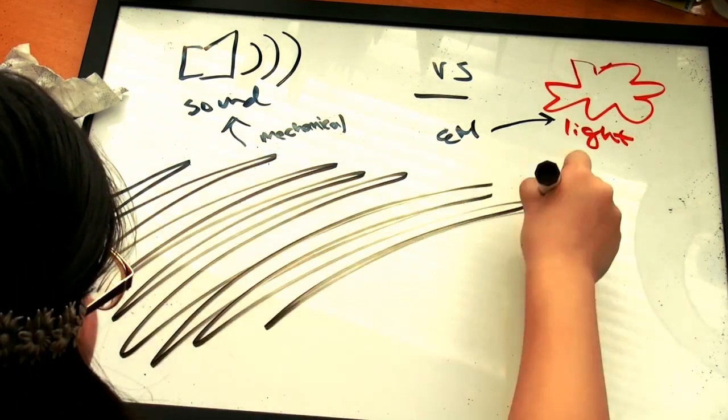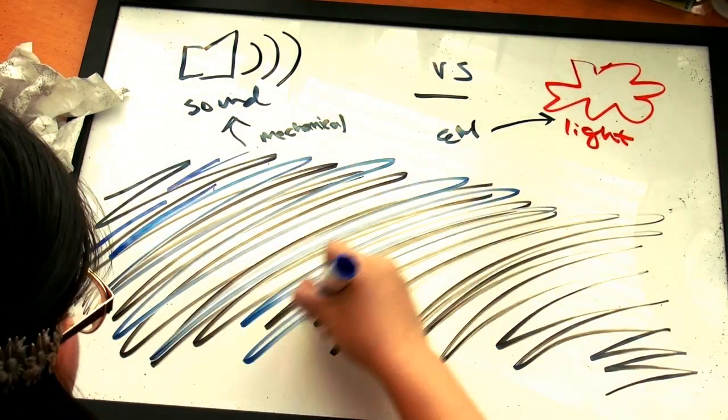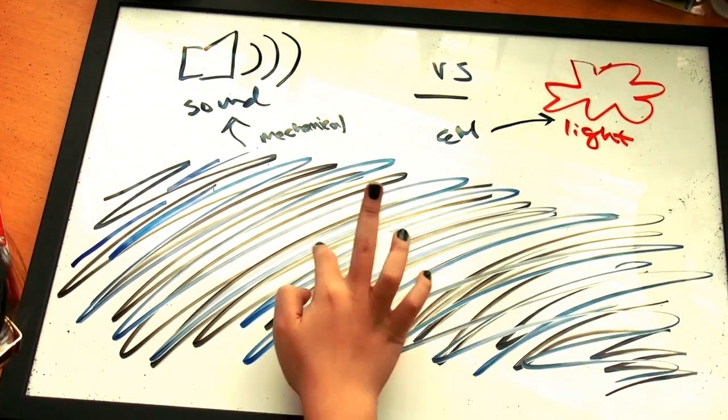Light, on the other hand, is an electromagnetic wave, and so it's able to propagate without a medium, or in a vacuum, such as in space.